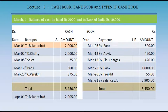Transaction 1, March 1: Balance of cash in hand Rs. 2,000 and balance in Bank of India Rs. 10,000. The first part — balance of cash in hand Rs. 2,000 — is recorded in the cash book on the debit side: date March 1, balance brought down Rs. 2,000.